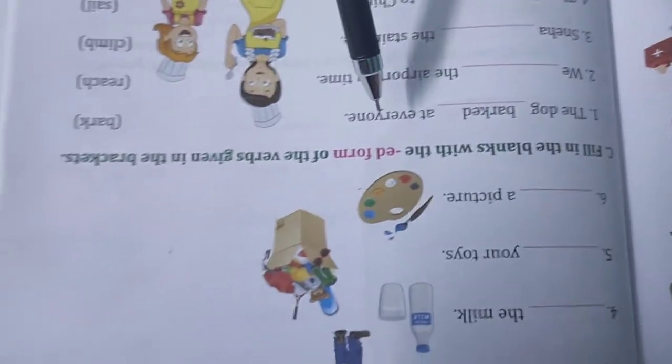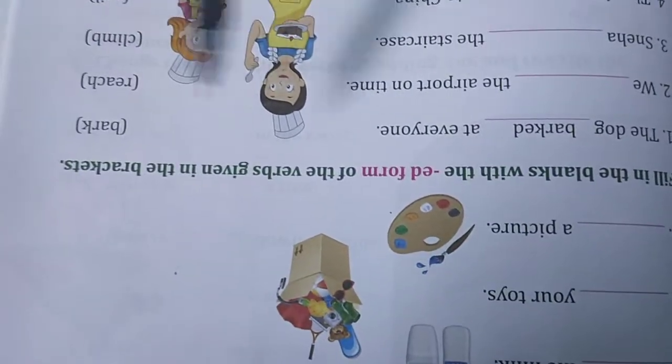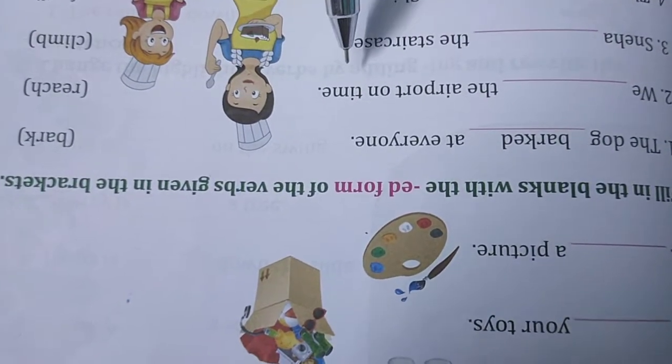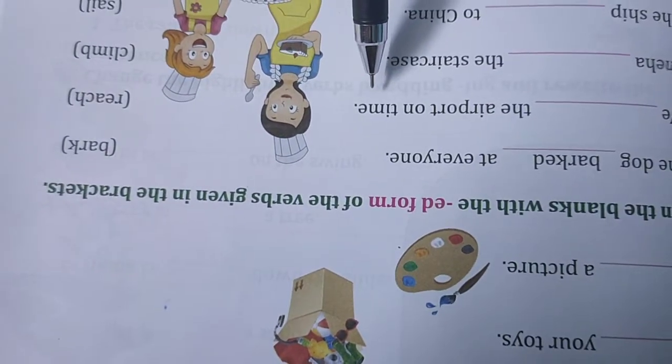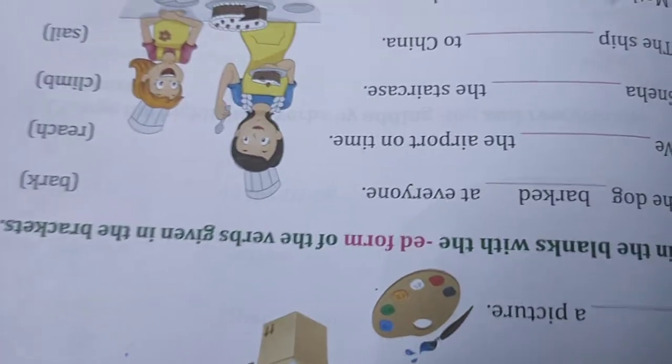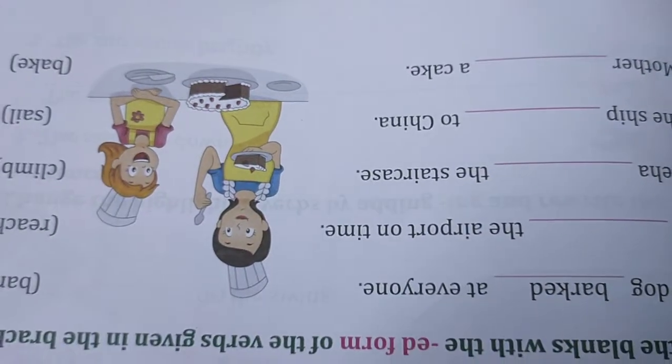Number C. Fill in the blanks with ED form. ED means past tense. The verb given in the brackets. Bark barked. We reached the airport on time. Sneha climbed the staircase. The ship sailed to China. Mother baked a cake.